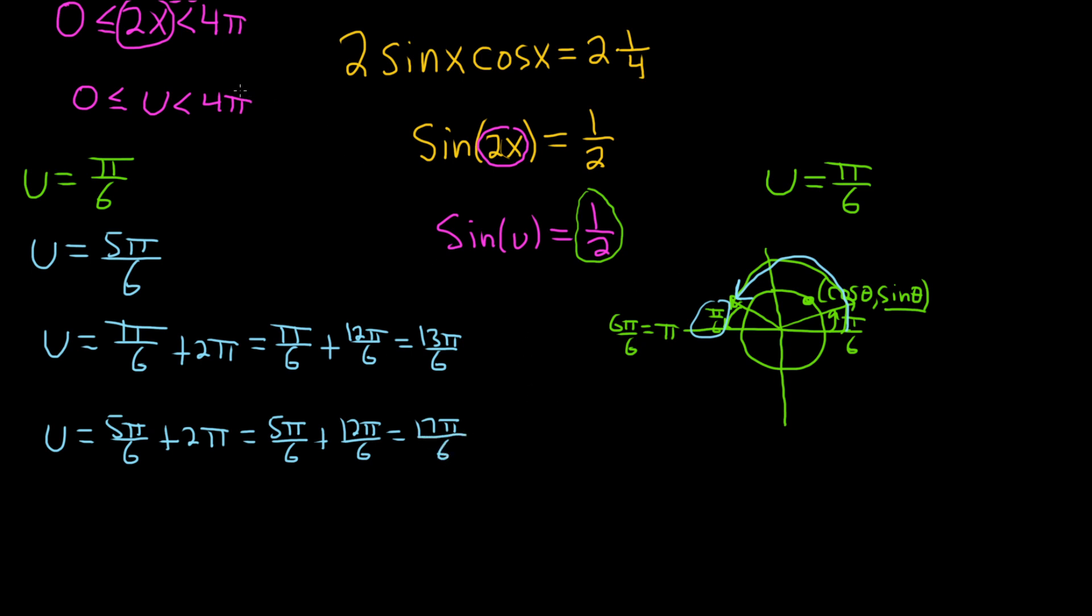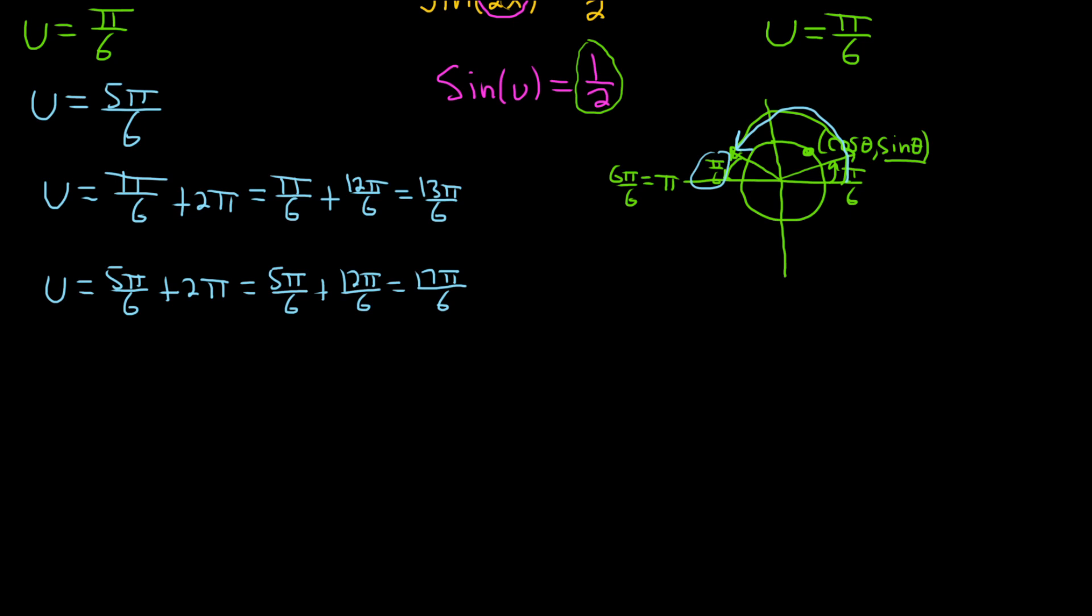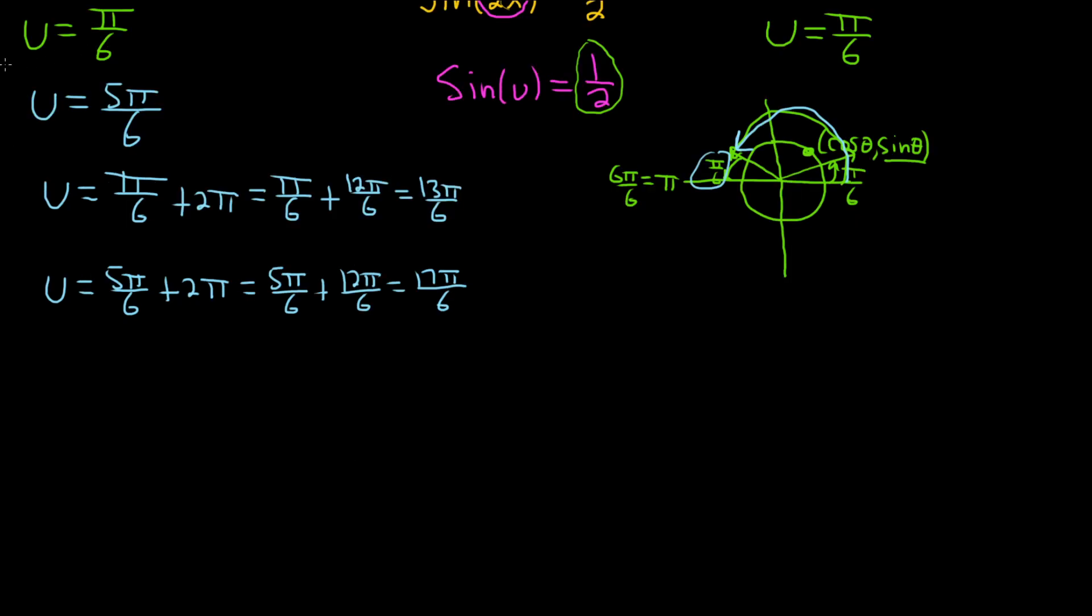And we can't add 2π again because then we'll go beyond 4π, right? So it would be 4π plus π over 6, which is beyond 4π. So now we have to solve each one of these. So it's a little bit more work. So u... Let's go back. U is 2x. So in the first case, we have 2x equals π over 6. To solve this, you multiply by 1 half. And so we get x equals π over 12. There is one of our answers.